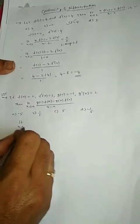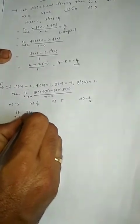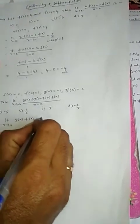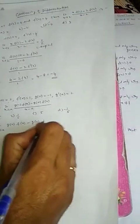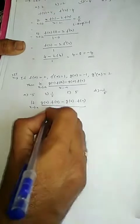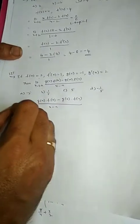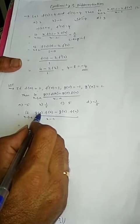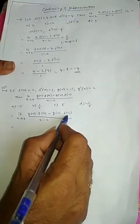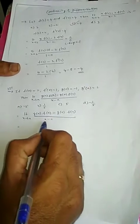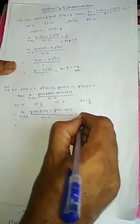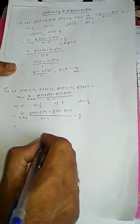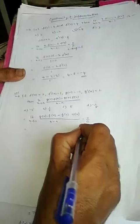Substituting the limit x→a gives g(a)·f(a) - g(a)·f(a) = 0 in the numerator and a - a = 0 in the denominator. This is again the 0/0 indeterminate form, so we can use L'Hôpital's rule.